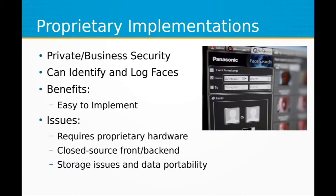To begin, I'd like to take a look at just a few of the current implementations — ways that facial recognition is being used. First, for private business security systems, things like security cameras for companies. One is provided by Panasonic. It has a lot of features which are relatively useful for that sort of thing. It's primarily to track people who go into a single business or office multiple times, and kind of monitor that for security purposes, so if there's any incident, that can be traced back and identified. These aren't really designed to scale.